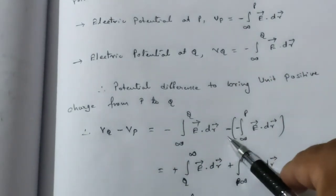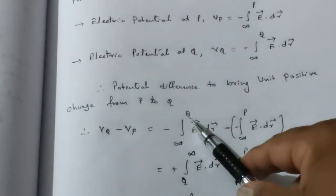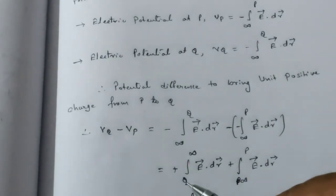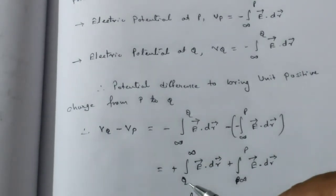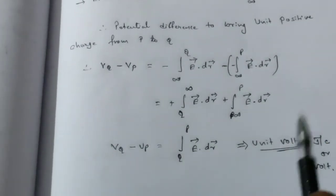Negative becomes positive so we get Q to infinity E dot dR plus infinity to P E dot dR. With the same limit we can go directly from Q to P.